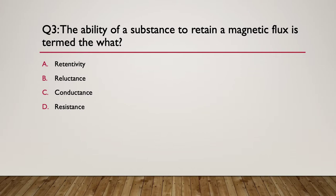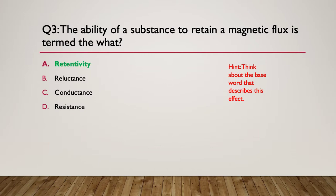Question 3: the ability of a substance to retain a magnetic flux is termed what? A: resistivity, B: reluctance, C: conductance, D: resistance. Think about the base word — 'retain.' The answer is retentivity. Reluctance is the exact opposite effect. Conductance and resistance are electrical terms, not magnetic terms.